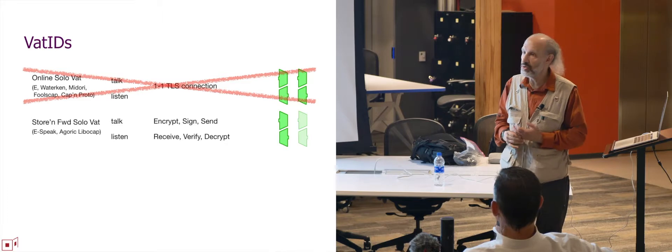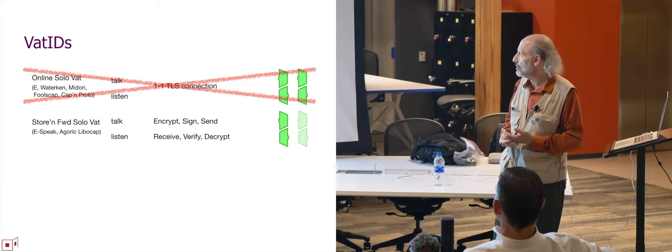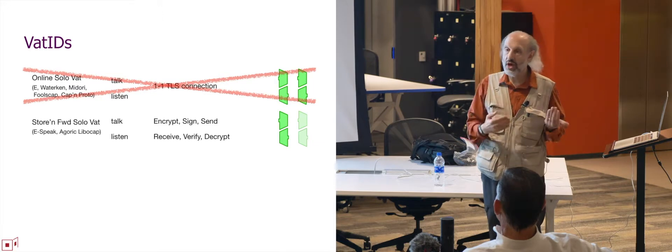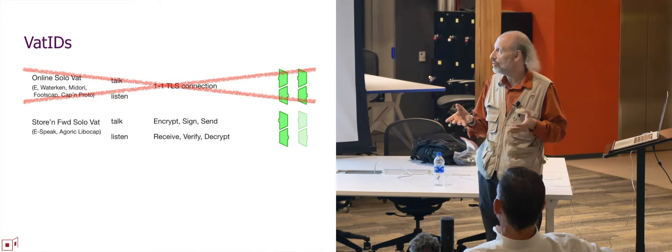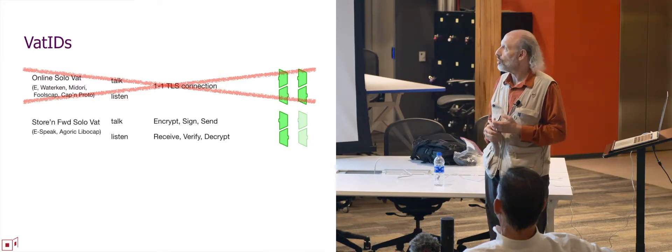All of those previous systems going back to the mid-90s were using live TLS connections. A live TLS connection, because of its bidirectionality, solves the whole problem for both sides in one mechanism. But exactly because of its one-for-one live connection nature, it doesn't generalize into the world we're trying to build. Instead, we sign individual messages — each individual message can be treated as a unit — and now we can accommodate store-and-forward VATs.